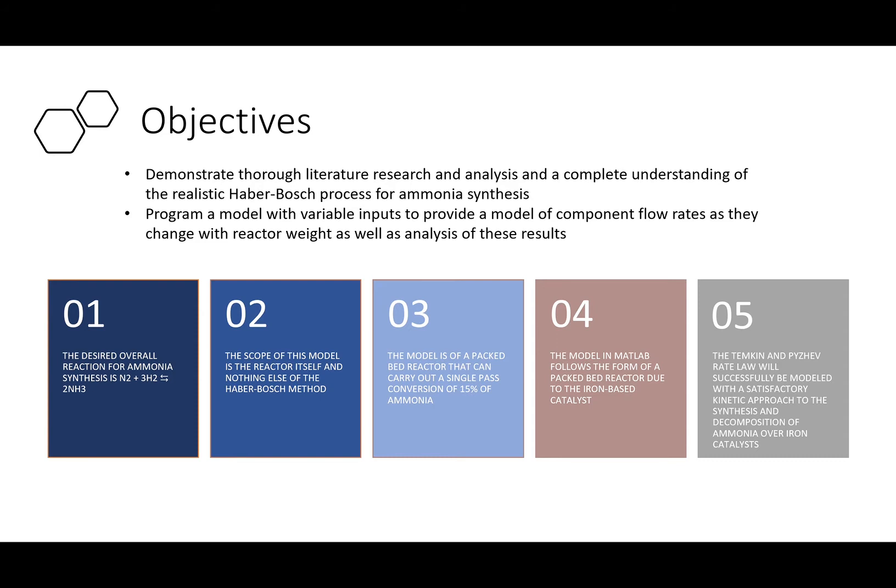For the objectives, the reaction of nitrogen and hydrogen to become ammonia. The project will only cover the reactor part of the Haber-Bosch method. This reactor will carry a single-pass conversion of 15% ammonia. To model this, we utilized MATLAB based on an iron-based catalyst. Lastly, we utilized the Temkin and Peisev rate law in order for us to understand the synthesis and the composition of ammonia over iron catalysts.